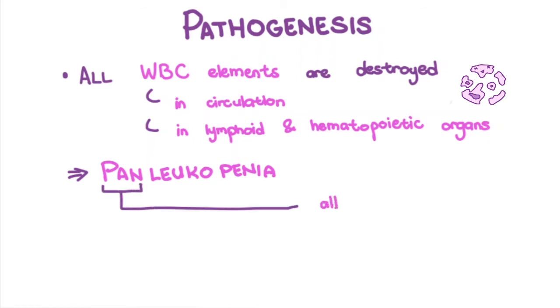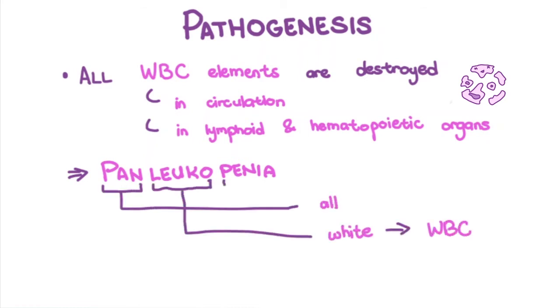Pan meaning all, leuko meaning white — referring to white blood cells — and penia meaning decreased number. Decreased number of all white blood cells.